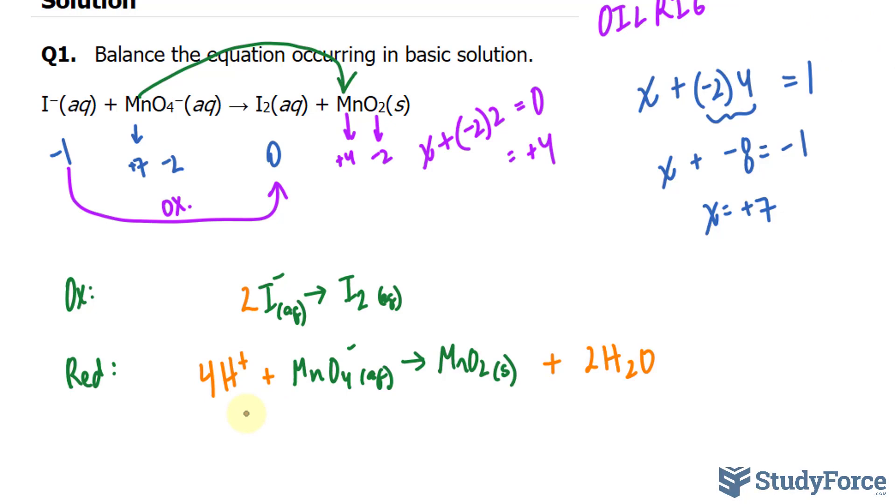Now the difference between acidic solutions and basic solutions, which is the one that we have here, is that you have to neutralize the H plus ions by adding enough hydroxide anions to neutralize each H plus ion.